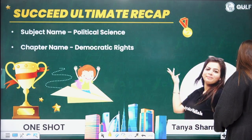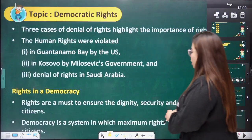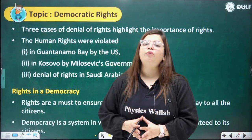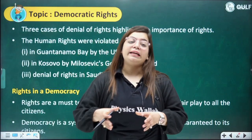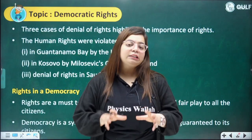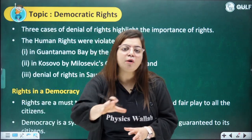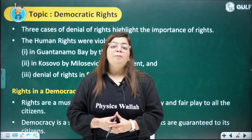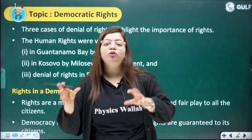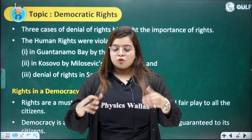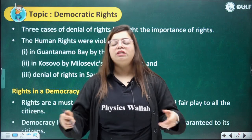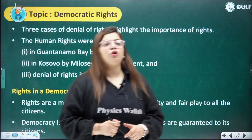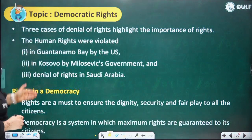So when we talk about democratic rights, first of all we need to understand why we need rights in a democracy. What is democracy? Democracy is a form of government in which the rulers are elected by the people. This type of government is different from other forms like monarchy, dictatorship, and any other non-democratic government. It is very essential to give rights and have rights because ultimately a democratic government is also known as people's own government. So first of all we need to understand three cases of denial of rights.